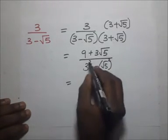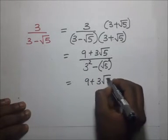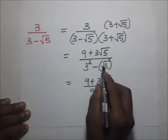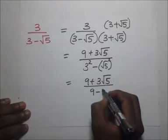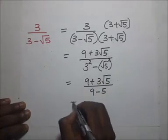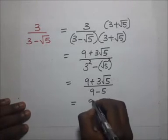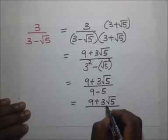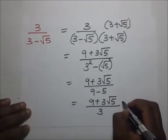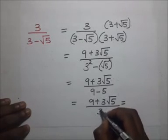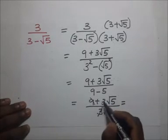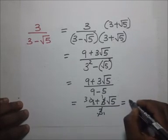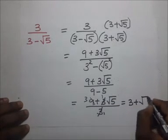Opening the numerator brackets: 3 times 3 is 9, and 3 times root 5 is 3 root 5, giving 9 plus 3 root 5. The denominator is 3 squared minus root 5 squared, which is 9 minus 5, equals 4. Wait — simplifying further, dividing numerator and denominator by 3 gives us a final answer of 3 plus root 5.